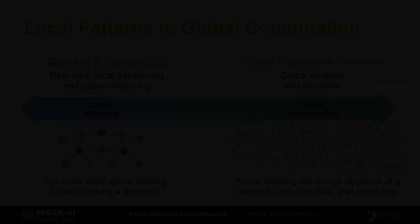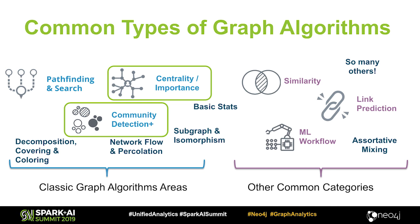We compiled a list of different algorithms. On the left side you can see more classic algorithms, like path finding — shortest path, which most of you should know. On the right side are a few not so well-known ones, like link prediction, which is the probability of two nodes to form a relationship in the future. In this talk, we'll be concentrating on centrality algorithms — how to extract how important a node is in a graph — and community detection algorithms, which are essentially clustering algorithms.